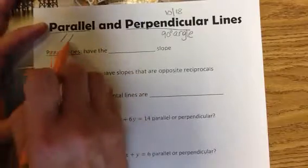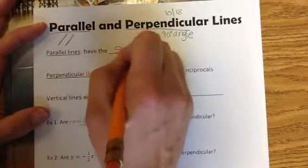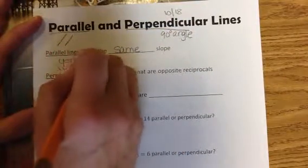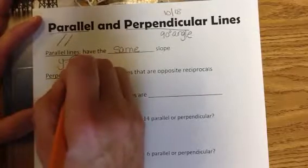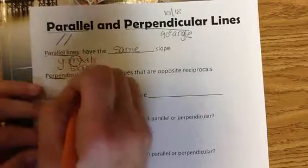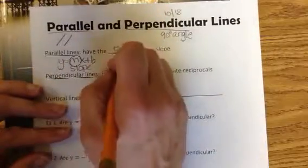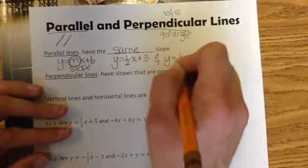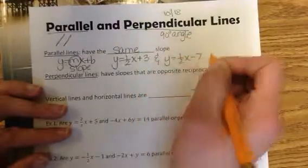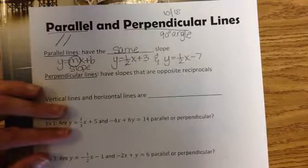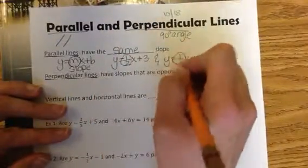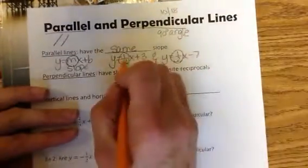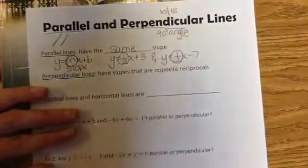Parallel lines are parallel and never intersect because they have the same slope. Think about y equals mx plus b — the m is your slope, so when you're solved for y, the m is what's in front of the x. So if you have y equals 1 half x plus 3 and y equals 1 half x minus 7, those two are parallel because the slopes are the same — both have 1 half.